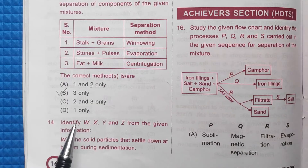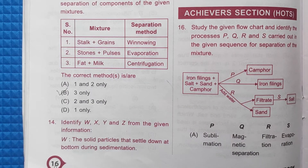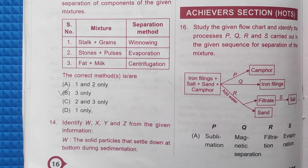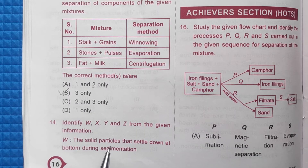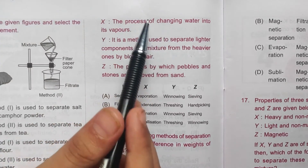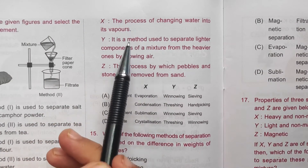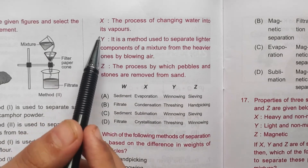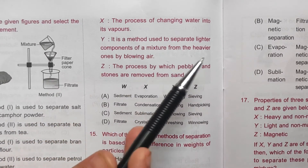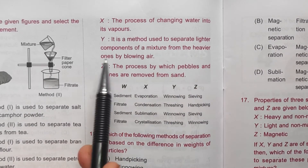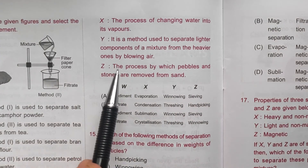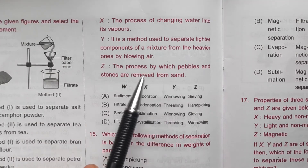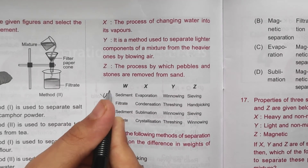Question 14: Identify W, X, Y and Z from the given information. W: solid particles that settle at the bottom during sedimentation — this is called sediment. X: the process of changing water into its vapor — this is evaporation. Y: method used to separate lighter components from heavier ones by blowing air — this is winnowing. Z: the process by which pebbles and stones are removed from sand — this is sieving. So the correct answer is option A.